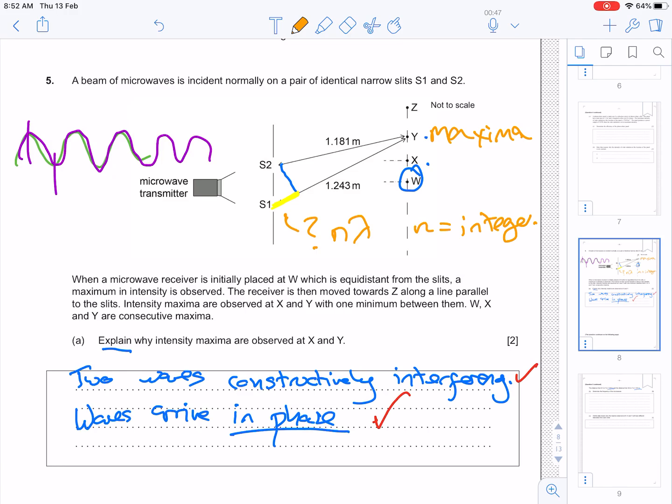Y, they're back in phase again, so this will be 2 lambda, will be the path difference between the two rays. So, it's equal to 2 lambda, and that's only for the rays arriving at position Y.